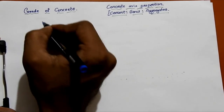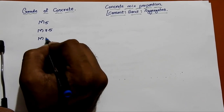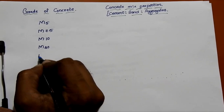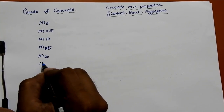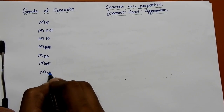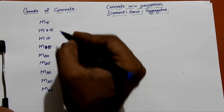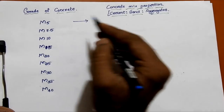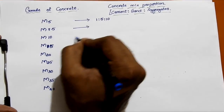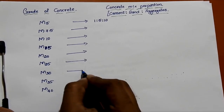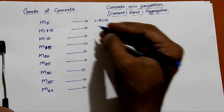We have grades starting from M5, M7.5, M10, M15, M20, M25, M30, M40, and so on. M5 grade of concrete has a concrete mix proportion of 1:5:10. We will write all the concrete mix proportions for all grades of concrete. We simply reduce the number of the sand proportion — 5, 4, 3, 2, 1 like that.